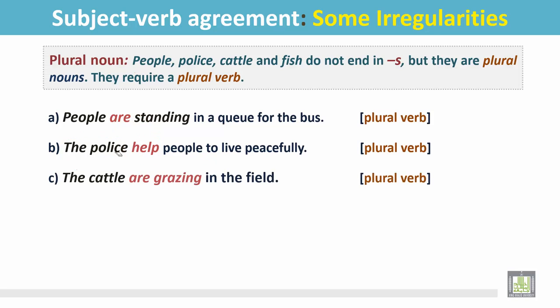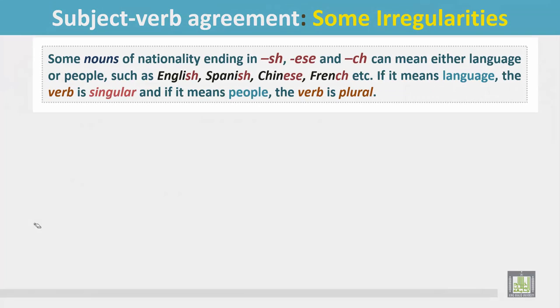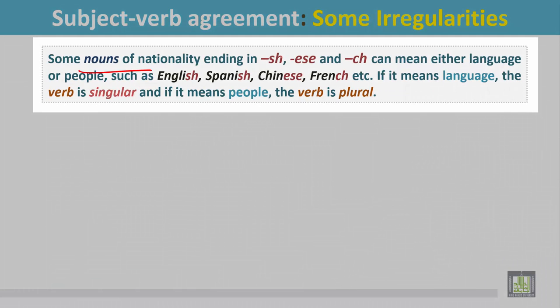'The cattle are grazing in the field.' Cattle is a plural noun and the verb is plural: are grazing. 'The fish live in water.' Fish is a plural noun, that's why the verb is live — the basic form of the verb.